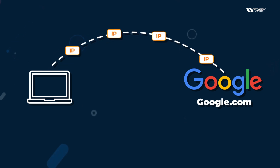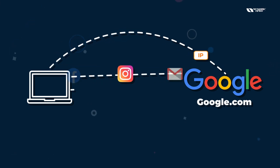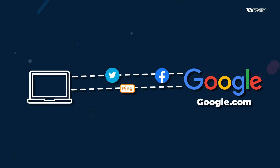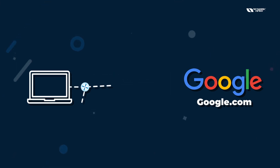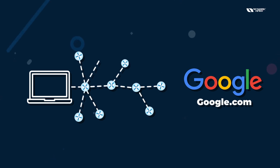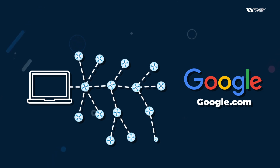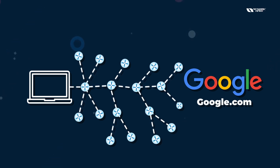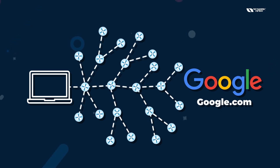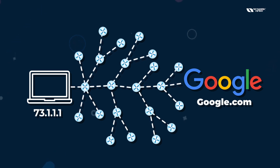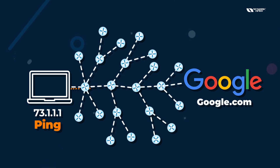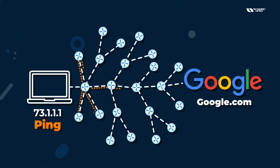Whenever you send any traffic — whether it is web traffic or a ping — there is a router, and further in ISP networks you also have routers, and on the internet there are many routers. The internet is nothing but a network of networks, and you may have thousands of routers. Suppose you want to go to google.com but by mistake you type some different IP.